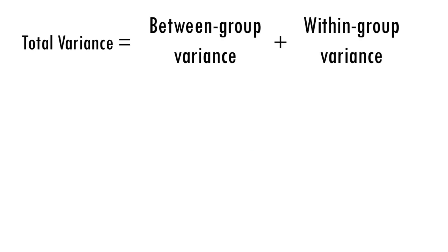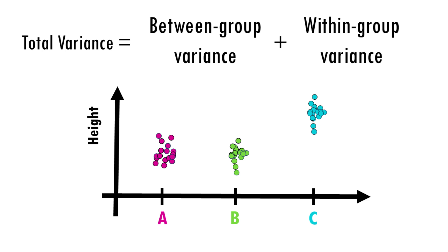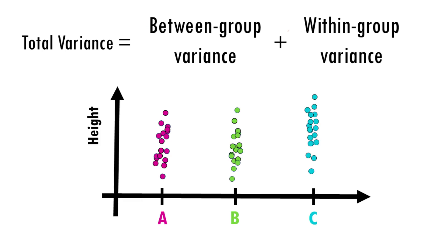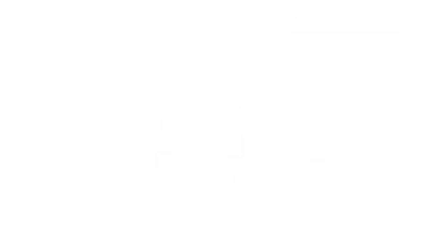Let's visualize this. Imagine measurements of height between groups look very separated — it's easy to say fertilizer C is much better: variance within groups is very small, but variance between groups is quite big. Now imagine the measurements overlap more. C has a slightly higher average, but within-group variance is quite big and between-group variance is not that big. It could just be noise — by random sampling you picked the tallest plants in fertilizer C and the smallest in A and B. ANOVA tries to quantify this, giving us a number to decide whether there is a real difference.